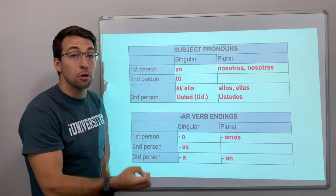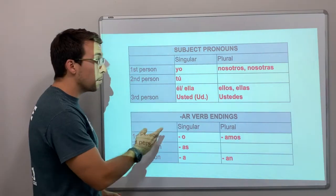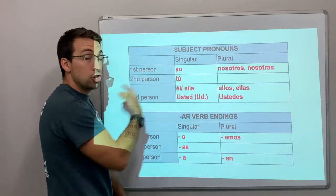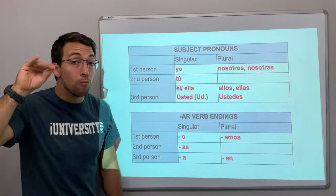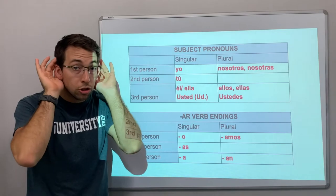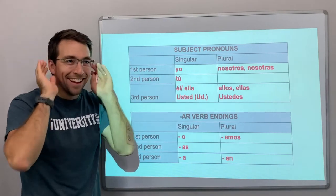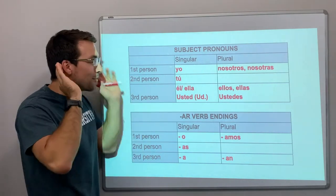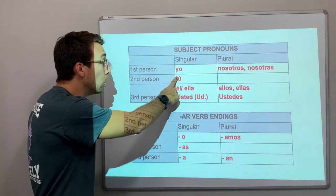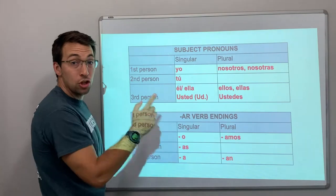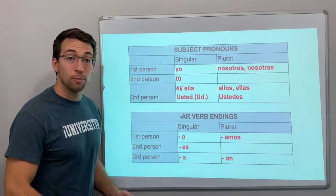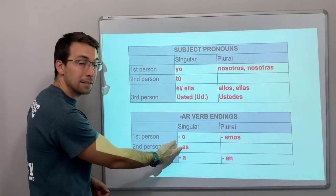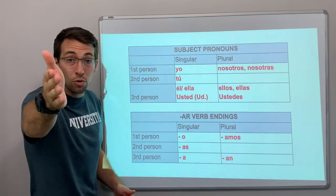The subject pronoun is the person doing the action of the verb. So if the verb ends in 'o,' that means yo — yo hablo mucho, I talk a lot. If it ends in 'as,' like caminas, you walk — caminar is an AR verb. The ending 'as' tells you that tú is the one doing the action.